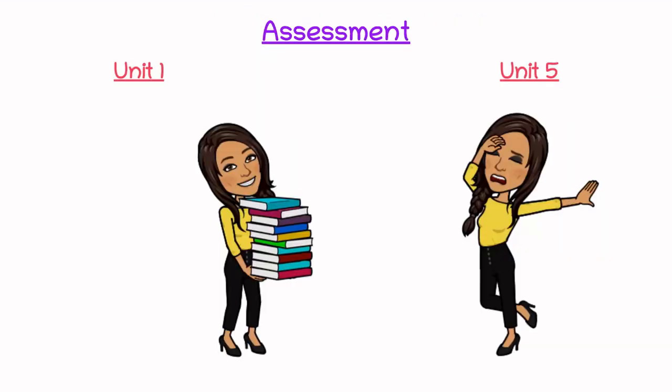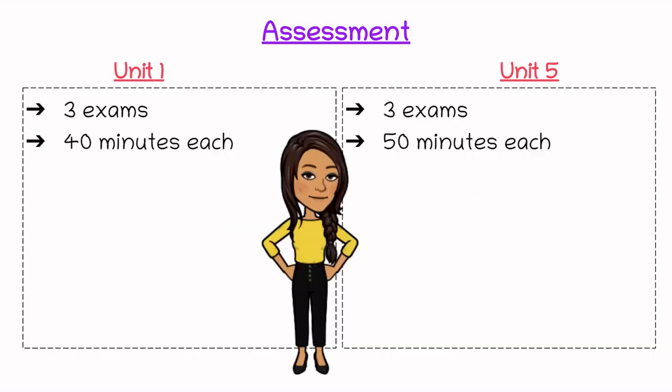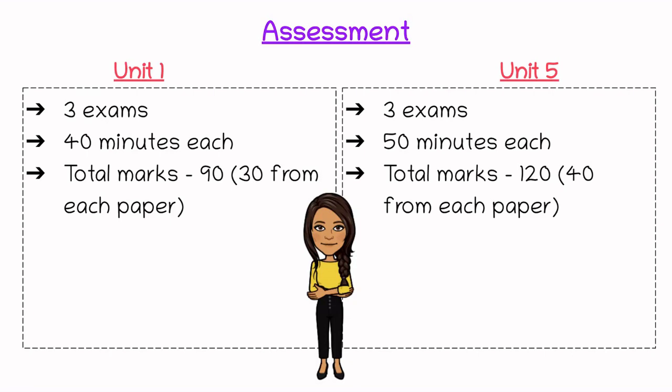In terms of assessment, both units are relatively similar — they both have three exams which are similar in timing. Unit 1 exams are 40 minutes each and Unit 5 are 50 minutes each. In Unit 1 each paper is worth 30 marks, giving a total of 90 marks. Unit 5 has a total of 120 marks with 40 marks in each of the three papers.